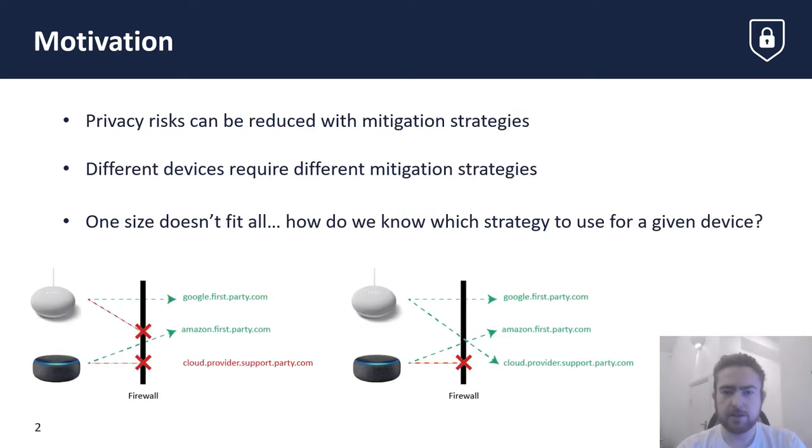Various mitigation strategies attempt to improve the privacy of IoT devices by blocking or restricting certain traffic based on its destination. The problem is that different devices may use a given domain for different purposes. If a particular domain, shown here as cloudprovider.party.com, is always blocked by a blanket blocking policy, then certain IoT devices may be prevented from performing their required function. A device-specific approach is required.